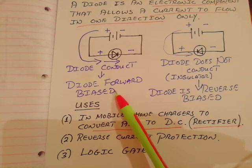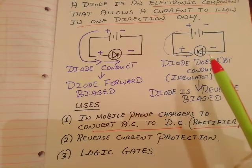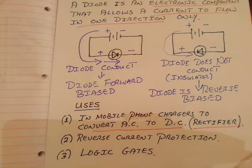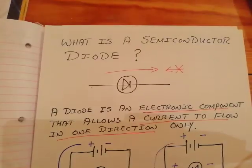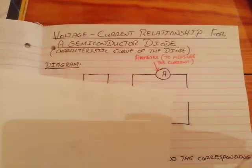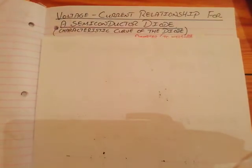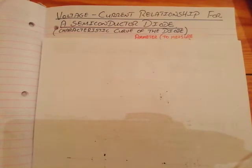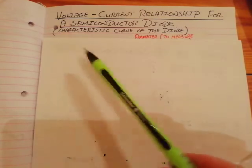It's very important to know the symbol of a diode and what forward and reverse bias mean. Forward biased: the diode is connected so it conducts. Reverse biased: the diode is connected so it will not conduct. Now, getting on to the experiment — the voltage-current relationship for a semiconductor diode, also known as the characteristic curve of a diode.